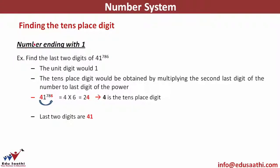For a number ending with 1 — and I'm talking about the unit digit — I'll make you understand with the help of an example. Find the last two digits of 41 raised to power 786. If a number ends in 1 raised to any power, the last digit would always be 1. So the last digit is already fixed.